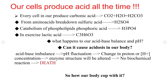Our cells produce acids all the time. Every cell in our body produces carbonic acid — CO₂ and water react to produce carbonic acid. From amino acid breakdown, for example sulfur-containing amino acids produce sulfuric acid. Catabolism of phospholipids produces phosphoric acid. Exercise produces lactic acid, and some diseases also produce a lot of acid.